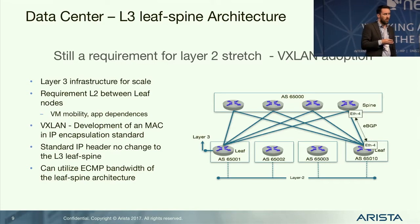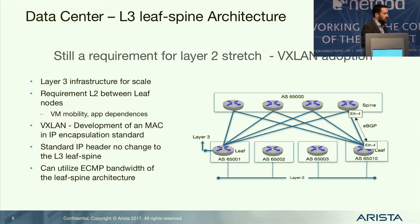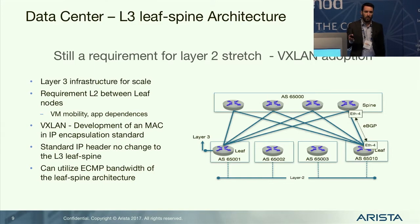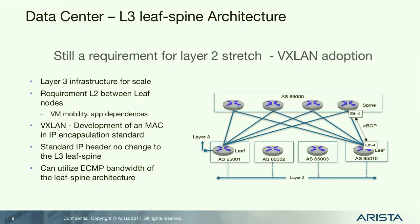Given adoption of that layer 3 topology, there is still a fundamental requirement within the DC to stretch layer 2. This is where the whole idea and drive behind VXLAN came about — developing an encapsulation method to make use of that ECMP environment without having to redesign the entire network.